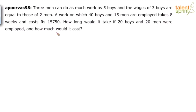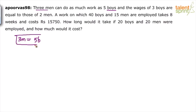There are 2 parts in the question — one is about the number of days and the second is about the cost. He says 3 men can do as much work as 5 boys. So if each man's capacity is M, the capacity of 3 men equals the capacity of 5 boys. Let each boy's capacity be B. Let us only work on the number of days first — forget about wages.